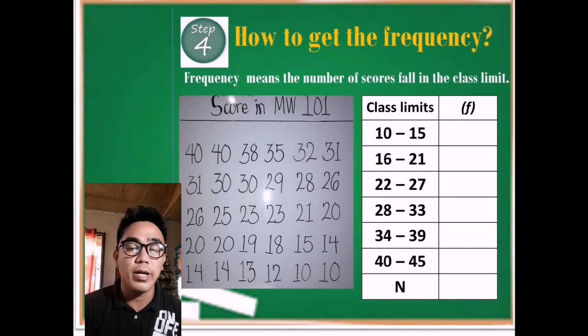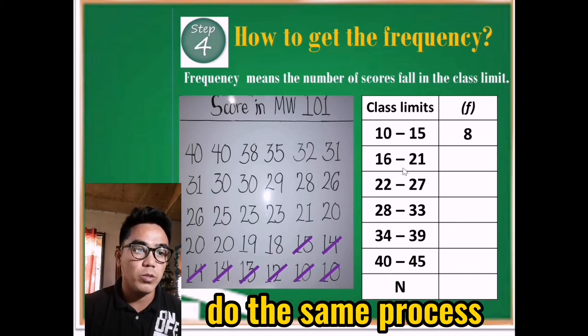Fourth, let us try to get the frequency for the given class limits. So 10 to 15, how are we able to find the frequency? Remember that the frequency means the number of scores that fall in the class limit. So here, 10 to 15: we have 10 here, so we count individually: 1, 2, 3, 4, 5, 6, 7, 8. Therefore, 10 to 15 class limit has a frequency of 8. The same process: 16 to 21, we have 1, 2, 3, 4, 5, 6. Then we put it here as 6.